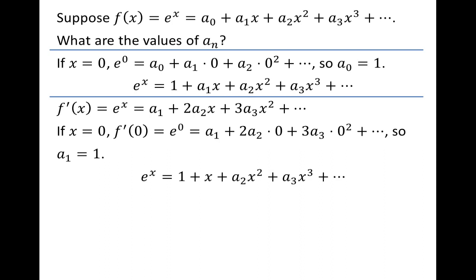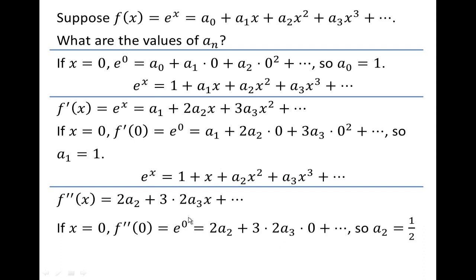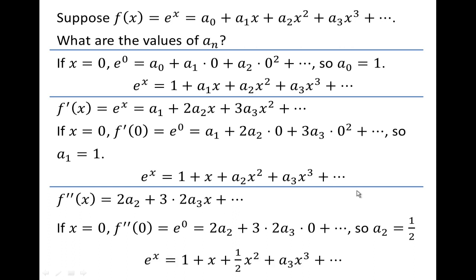We can continue this. Let's find the second derivative. The second derivative turns 2a₂x into 2 times a₂, and 3a₃x squared becomes 3 times 2a₃x, and every other term still has a factor of x. Let x equal zero — the second derivative equals e to the zeroth, so 2a₂ equals 1. Dividing both sides by 2 gives a₂ = 1/2. The next step: taking another derivative gives 3 times 2 times a₃, and we can use this technique to build up the full power series for e to the x.